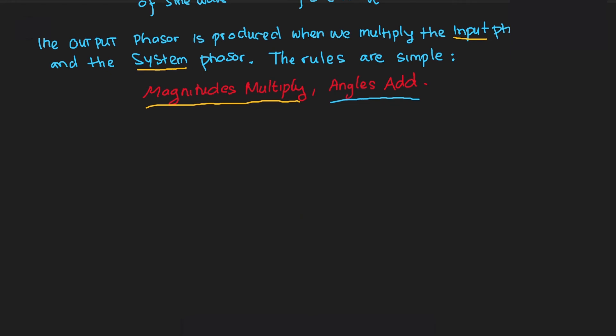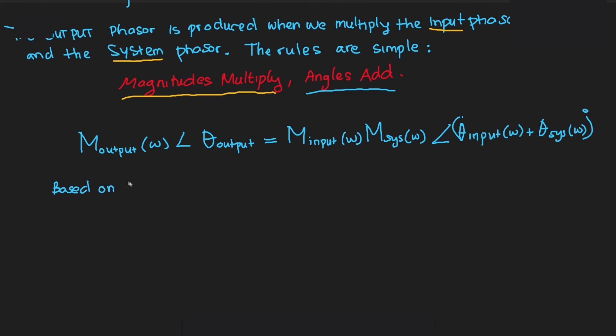Here's the equation: The output phasor, consisting of the magnitude of the output and the phase angle of the output, is equal to the magnitude of the input times the magnitude of the system, with the phase angle being θ_input + θ_system.